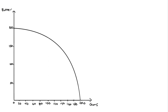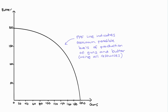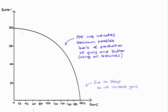Now the line of the PPF, just to review quickly, shows us the maximum level of production of guns and butter that are possible, given our resources and the state of our technology. And so at any point along this curve, we're utilising all of our resources. In this video, I'm assuming we're only producing on the line, and our curve is bowed outwards.